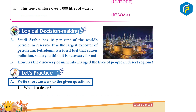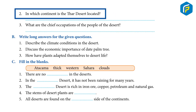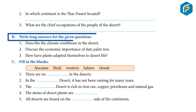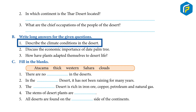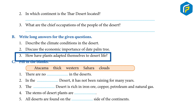Let's Practice: A. Write short answers to the given questions. 1. What is a desert? 2. In which continent is the Thar Desert located? 3. What are the chief occupations of the people of the desert? B. Write long answers for the given questions. 1. Describe the climate conditions in the desert. 2. Discuss the economic importance of the date palm tree. 3. How have plants adapted themselves to desert life?